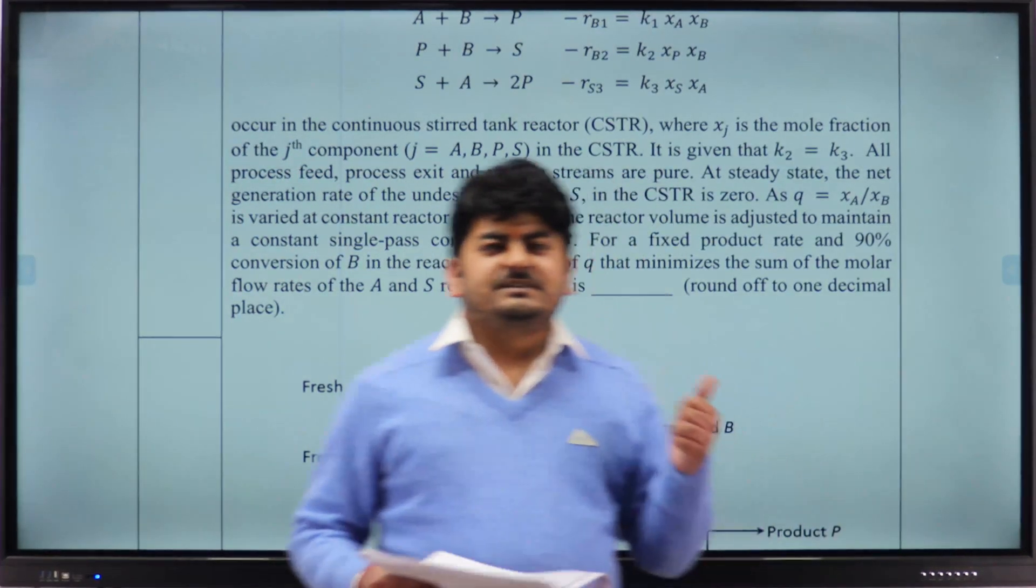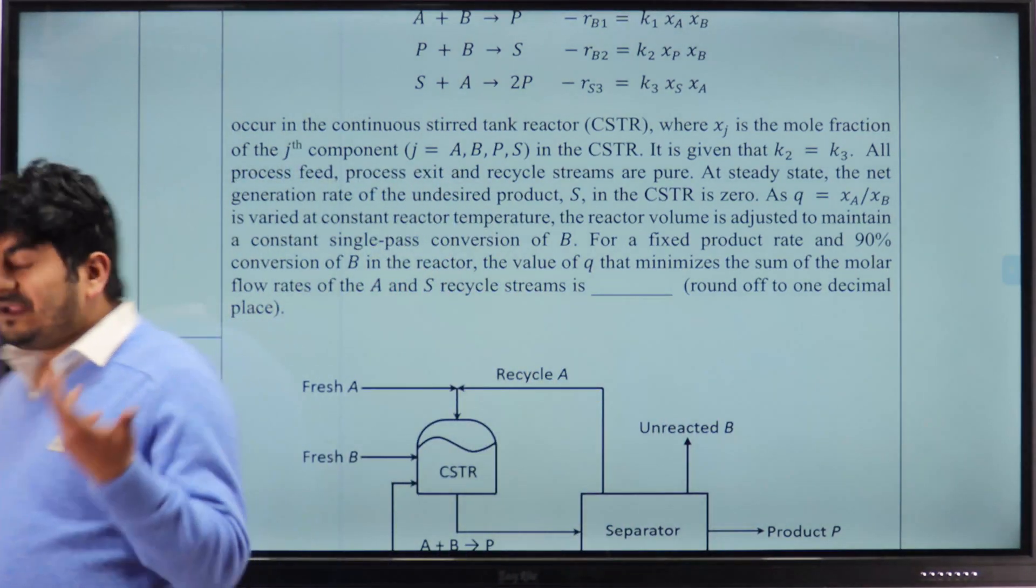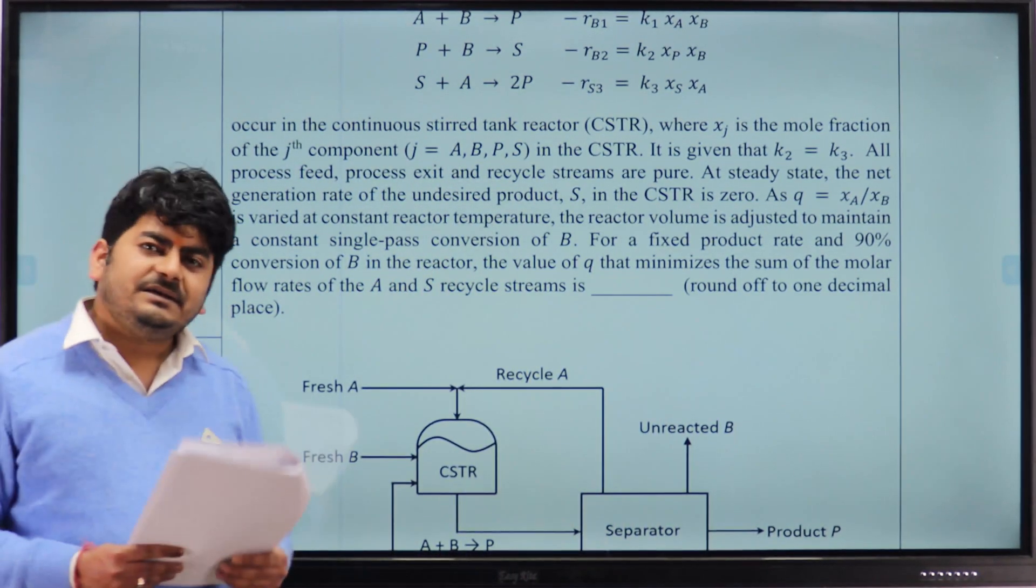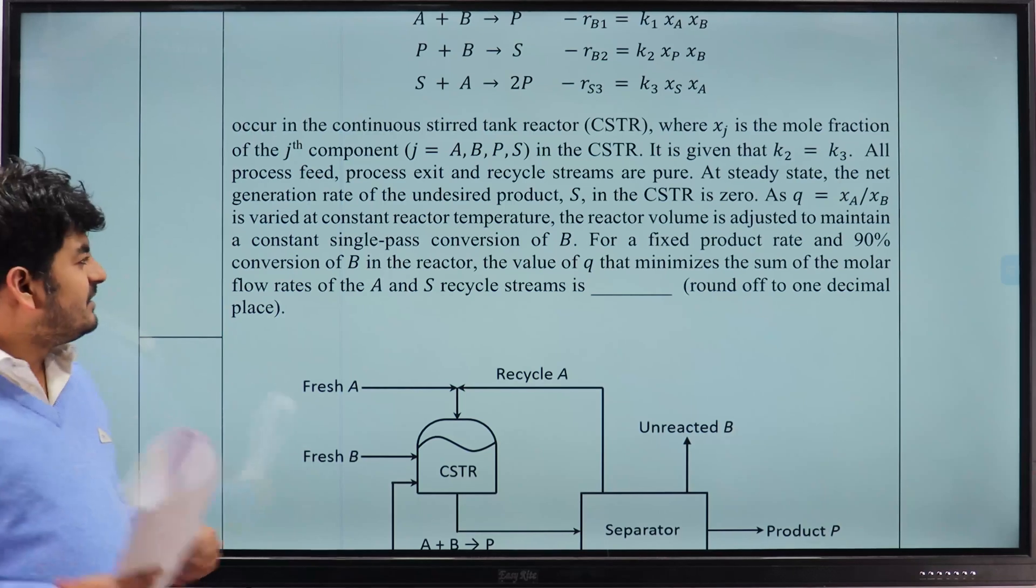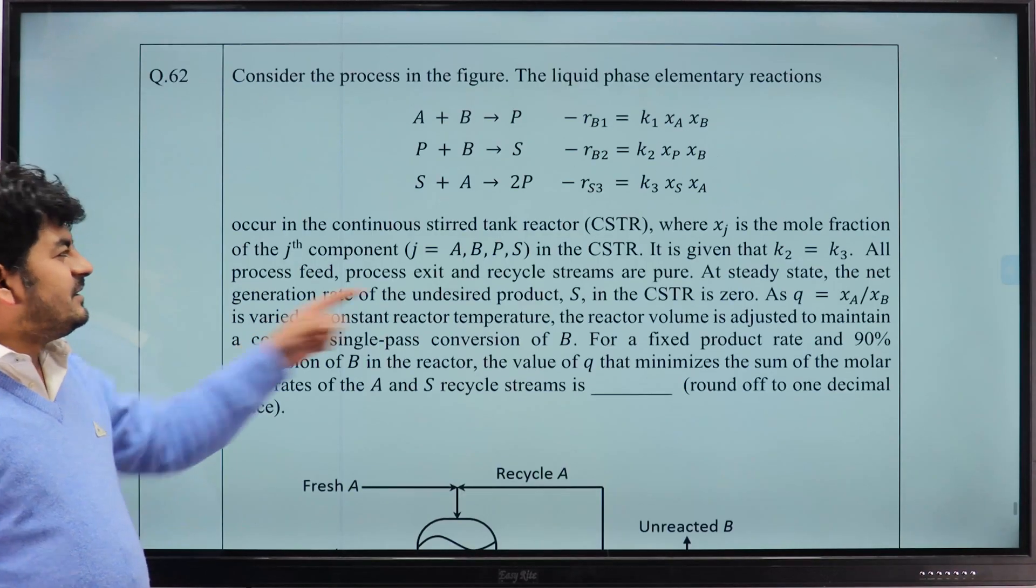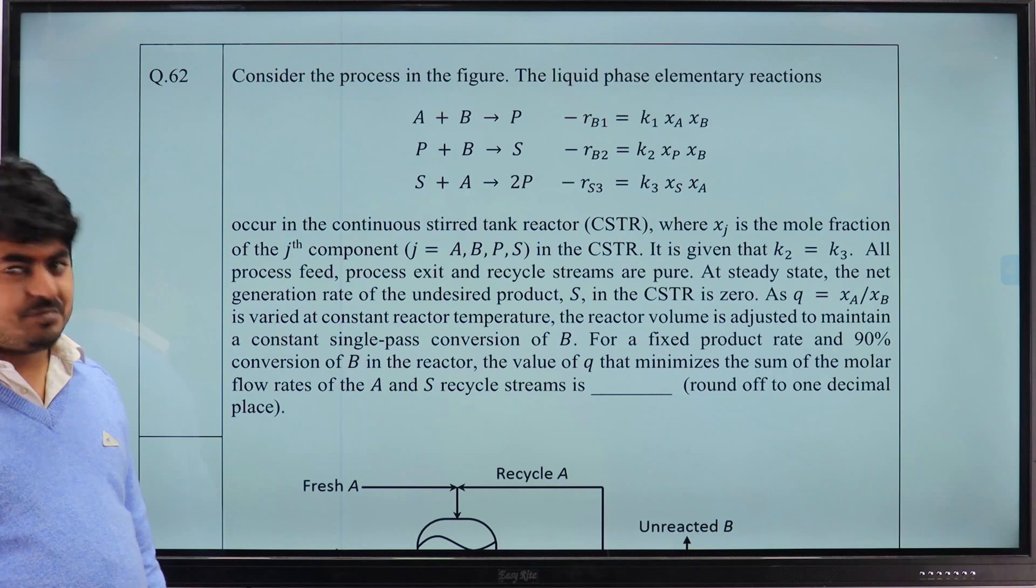For question 61, it is about 48.4. This question is from optimization, material balance, 0.5. It is CRE, all three topics are there. We will discuss the answer for this question tomorrow.